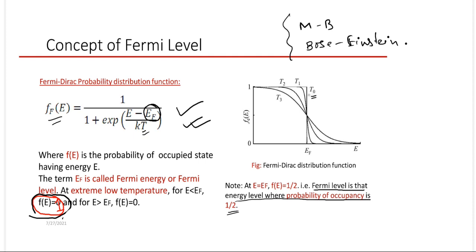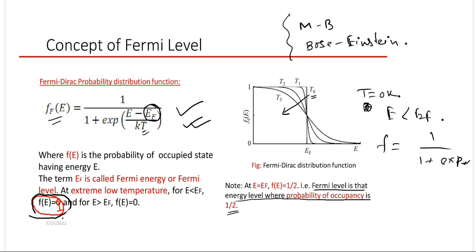For different temperatures T0 to T3, from low to high temperature, if we increase temperature the distribution changes. At T = 0K and E less than Ef, this term F will be 1 / (1 + e^(-infinity)), which equals 1 / (1 + 0) = 1. So for E less than Ef at very low temperature T0, the probability is 1, giving a step-like distribution.